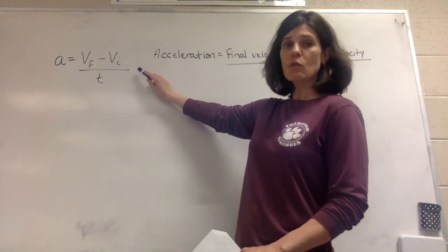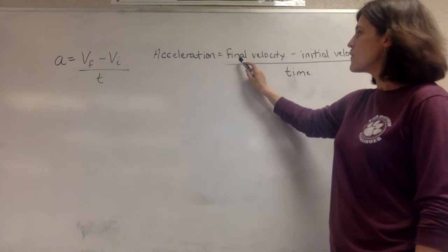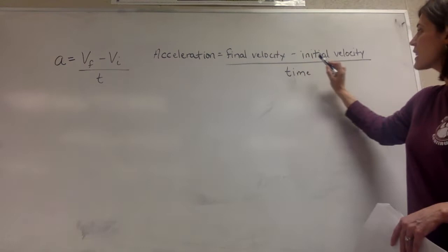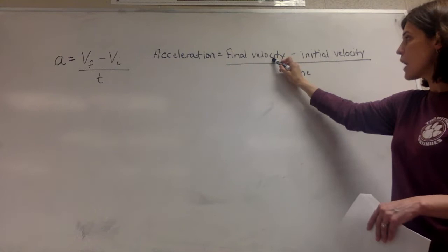Here is the equation. You will always be given the equation on any test or in-course test that you take. 'A' stands for acceleration. 'Vf' stands for the final velocity — the ending velocity, the velocity that the object is moving at the ending point. Then you subtract the initial velocity; initial means the starting velocity, and that's not always zero — it could be any number — but it's the starting velocity. You take final minus initial, then divide by time.